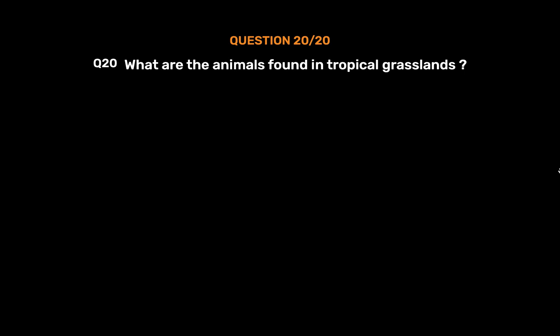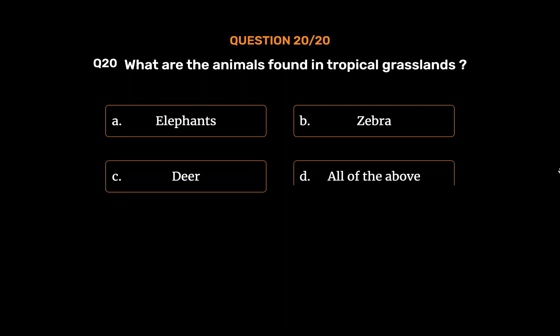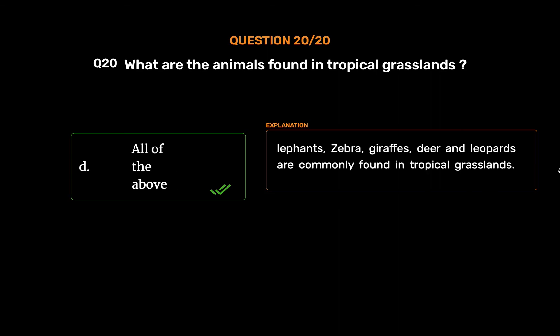Question number 20: What are the animals found in tropical grasslands? Option A: Elephants. Option B: Zebra. Option C: Deer. Option D: All of the above. The correct answer is Option D: All of the above. Elephants, zebras, giraffes, deer, and leopards are commonly found in tropical grasslands.